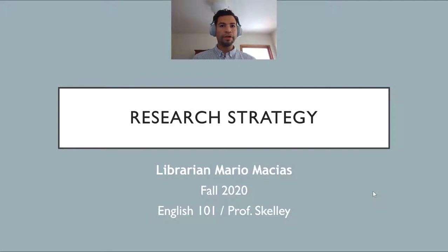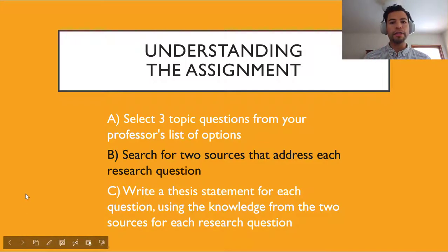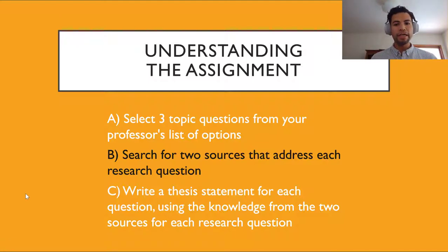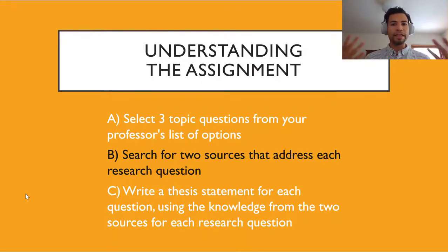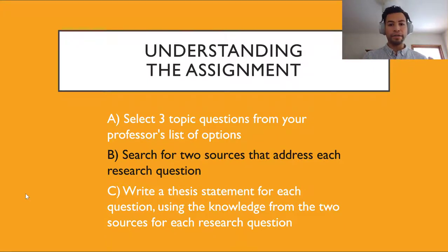I'm going to give a brief overview of your assignment. The first thing we want to understand is the actual research prompt. The first phase of this assignment is that you have a list of 24 research questions or topic questions, and you are supposed to pick three. For each of those three, you are supposed to find two sources that help you address that research question — so two times three, that's six sources in total. For each of these questions you're going to write a working thesis statement that addresses or answers that topic question using the two sources you found. Make sense?